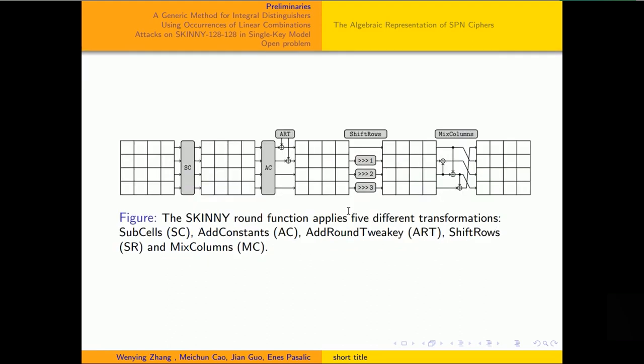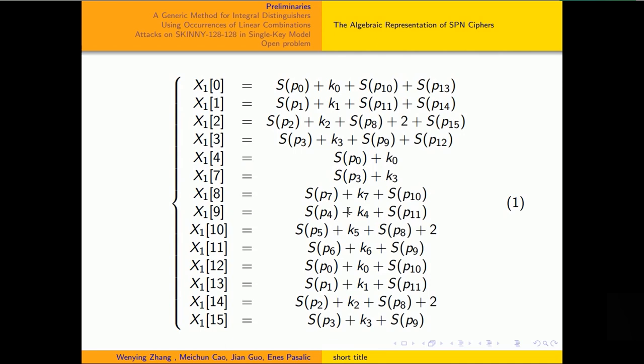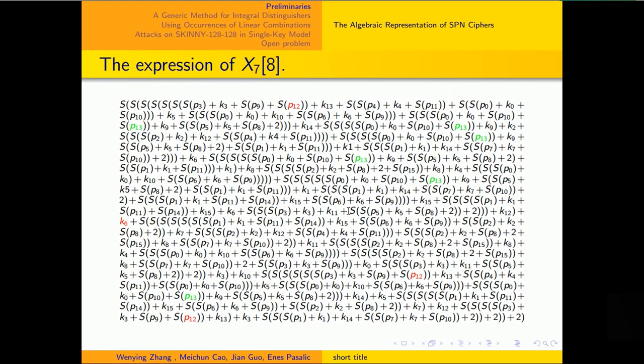This figure illustrates the structure of SKINNY block cipher. We represent the words of the first round by the plaintext words in Formula 1. By iterating this representation, we get the expression of the 8th word of round 7.